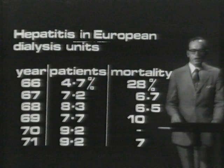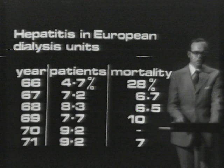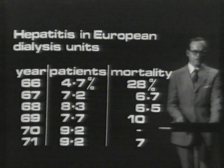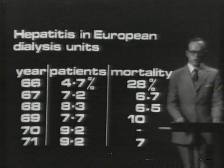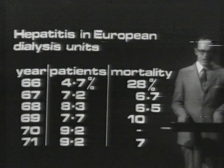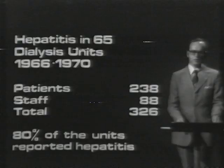I should now like to illustrate the laboratory findings with a practical example: the problem of hepatitis in hemodialysis units. A significant number of patients on maintenance hemodialysis suffer from hepatitis, and the mortality can be remarkably high — for example, in 1966, 28% of the patients died. The incidence is also shown by the number of cases reported from different centers between 1966 and 1970; in fact, 80% of dialysis units had reported cases of hepatitis by 1970.